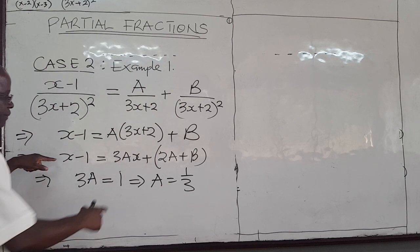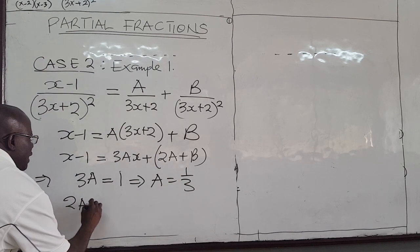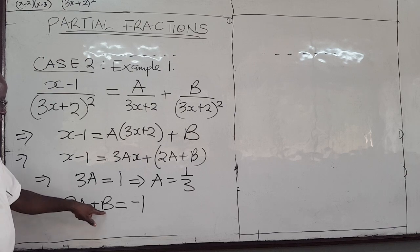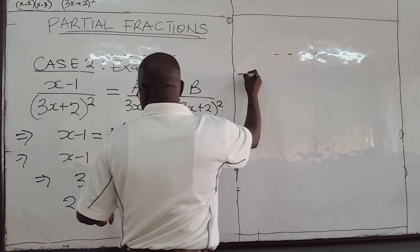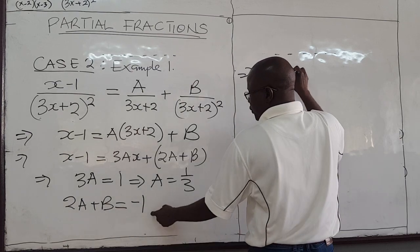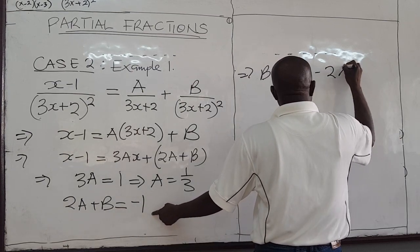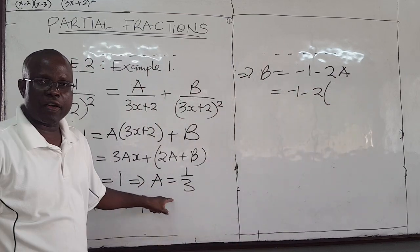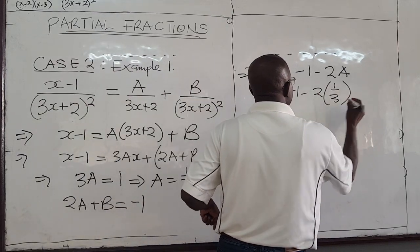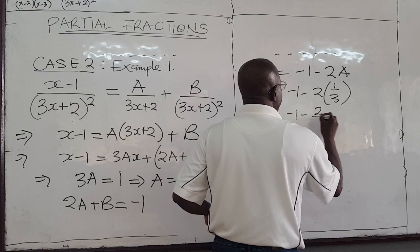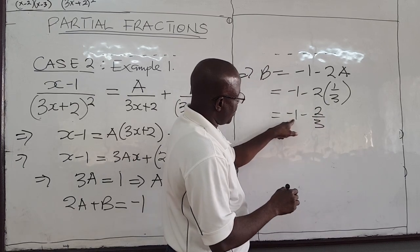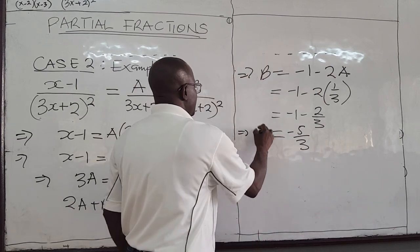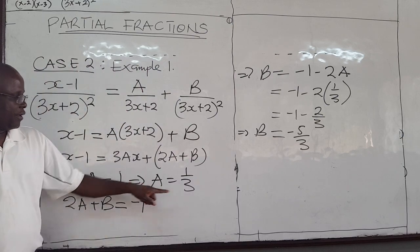Then I compare the constants. 2A plus B is equal to negative 1. But we know A already, so we can solve for B. So this implies B is equal to negative 1 minus 2A. So that is negative 1 minus 2, I multiply with A. A is 1 over 3. So I have negative 1 minus 2 over 3. That is negative 3 minus negative 2, so I have negative 5 over 3. So B is this.